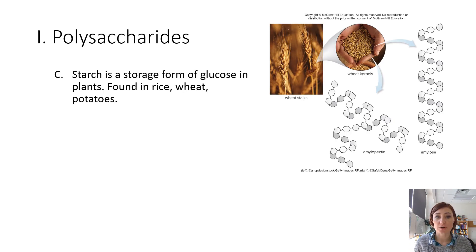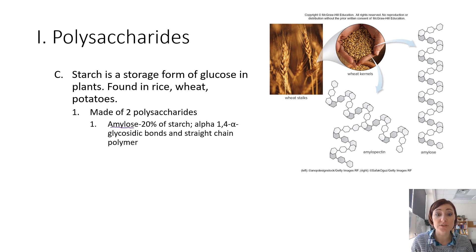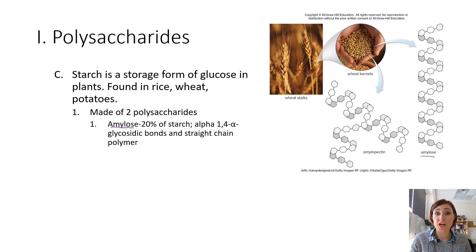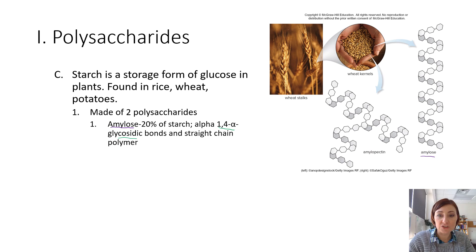Starch is a storage form of glucose found in plants — in rice, wheat, potatoes, and all of those starchy vegetables. It is made of two polysaccharides. The first is amylose, which makes up 20% of all starch. Amylose is a straight-chain polymer with no branching, and it contains alpha-1,4 glycosidic linkages.